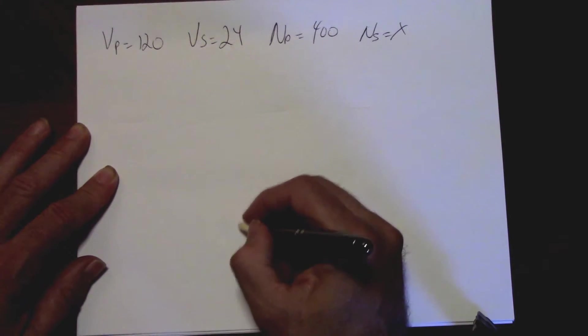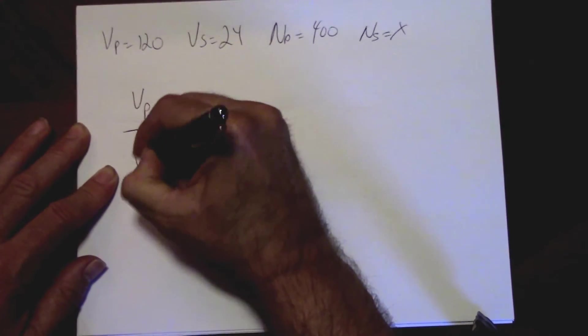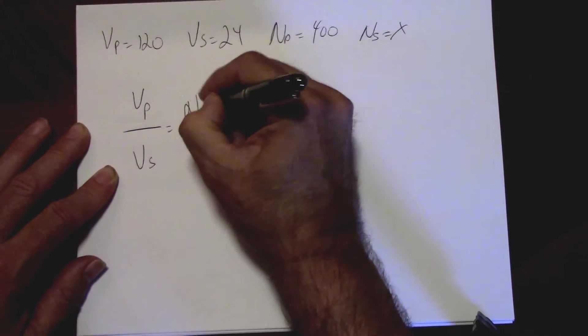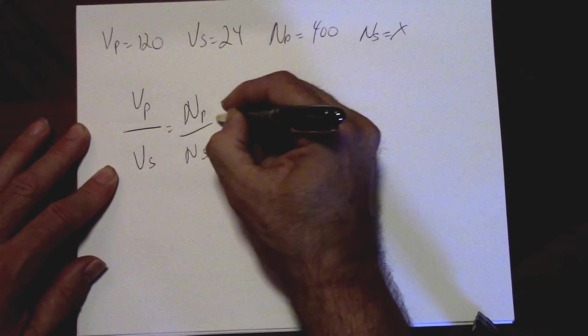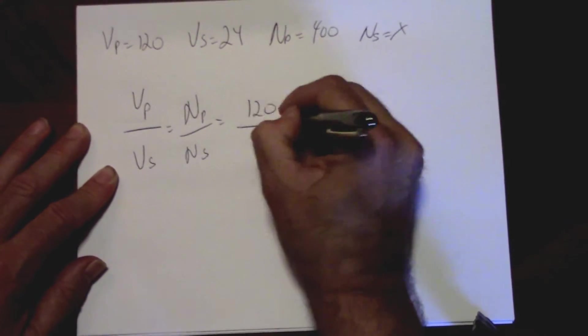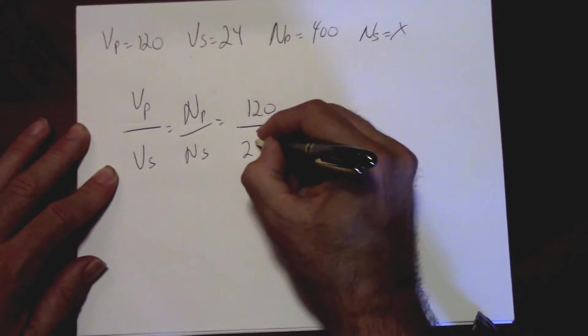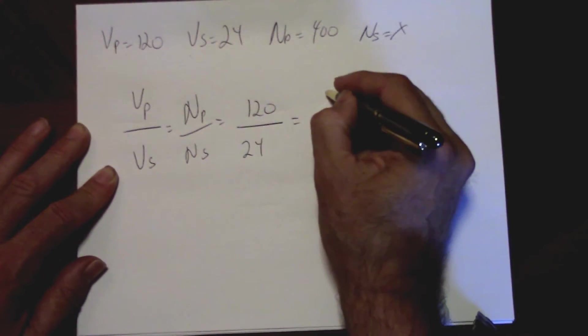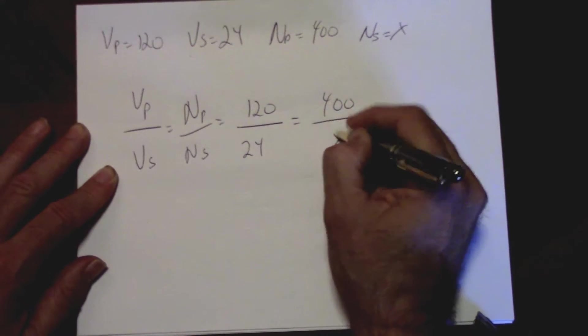Therefore, voltage primary over voltage secondary equals number of turns primary over number of turns secondary. Again voltage primary 120, voltage secondary 24 equals 400 over X.